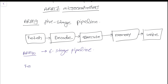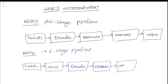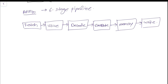In ARM10's six-stage pipeline, the stages are: fetch the instruction, issue the instruction to the next stage, decode the instruction, execute the instruction, memory access, and finally write back to the register or memory. The ARM pipelining stages differ across different versions of ARM processors.